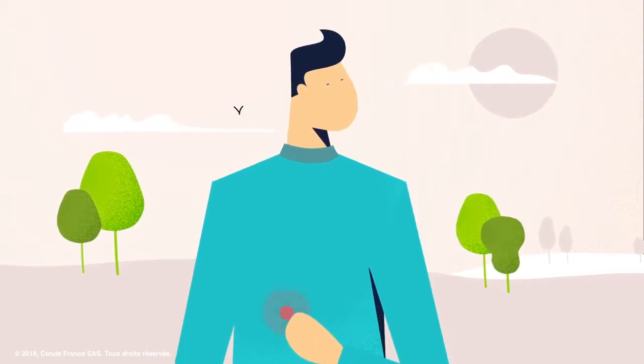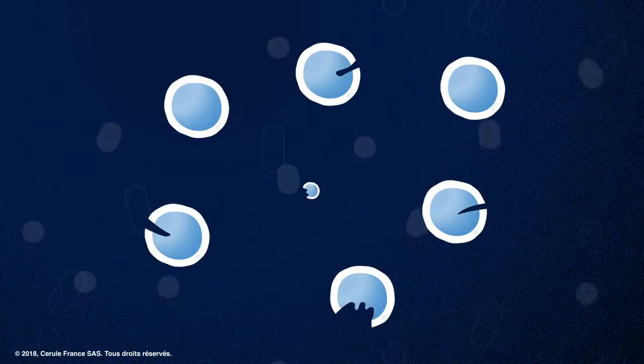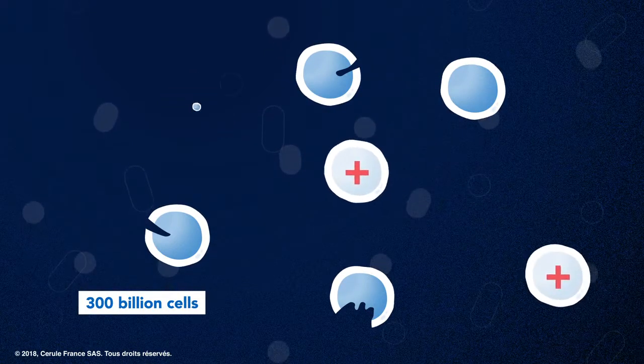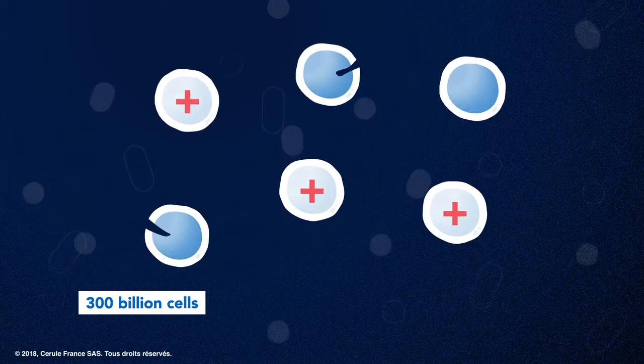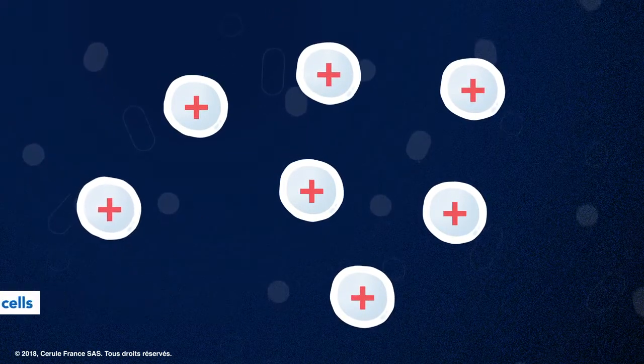Do you know how the human body replenishes and repairs itself? Every day, 300 billion old or damaged cells die and are eliminated from our body and need to be replenished or repaired.